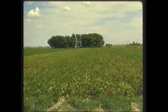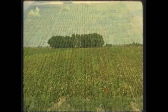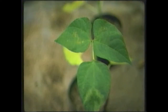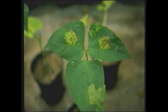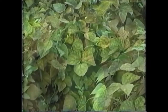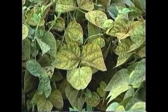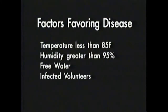Bean varieties can differ in their reactions to rust and the different races which it produces. Some varieties are resistant, while others are more susceptible. Rust spores are spread between plants and fields by wind. Multiplication and infection are favored by low to moderate temperatures and periods of high moisture during development of volunteer beans and later the new crop beans.